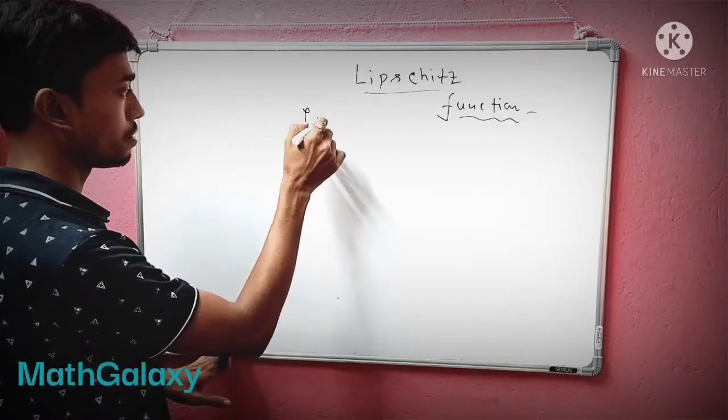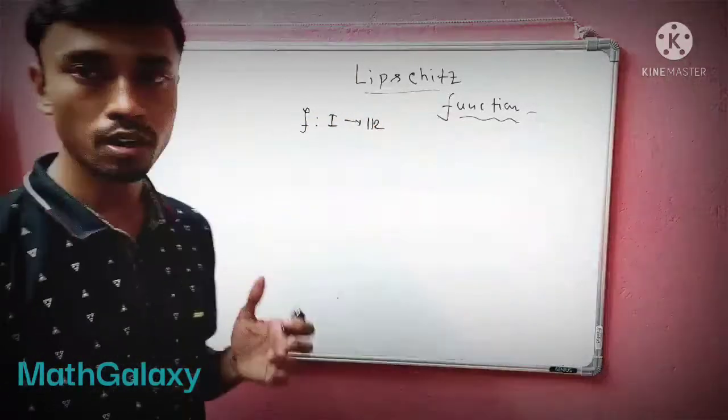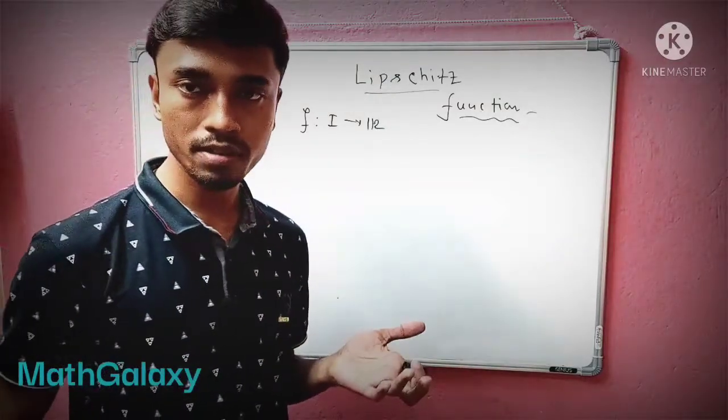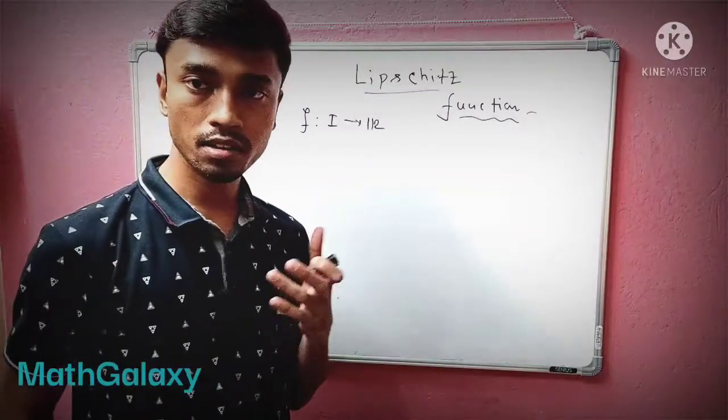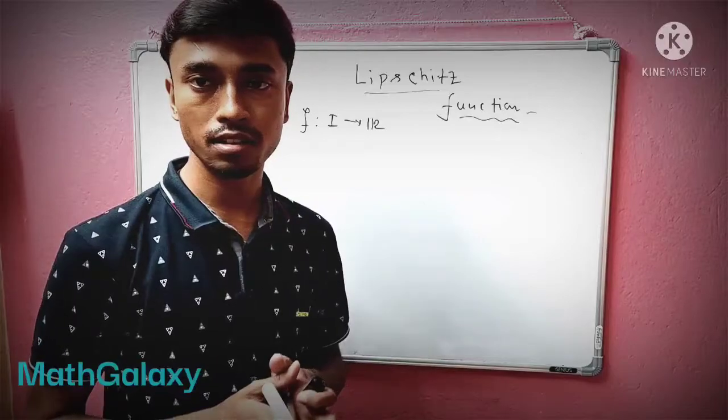a function like this: f: I → R. Here you can see what is I - I is basically an interval, it doesn't matter what kind of interval it is. So what is this condition? There is a condition - if the function maintains that condition then we say that the function is a Lipschitz function.